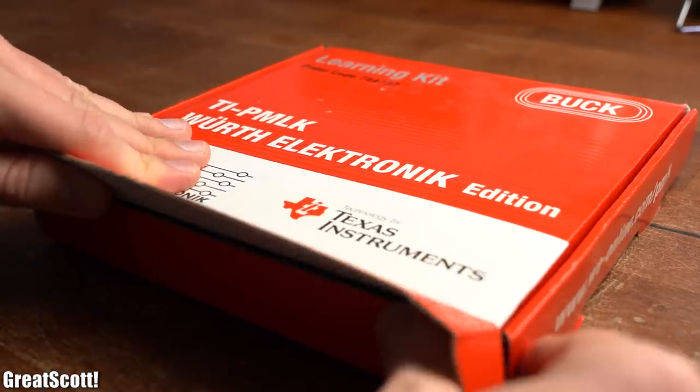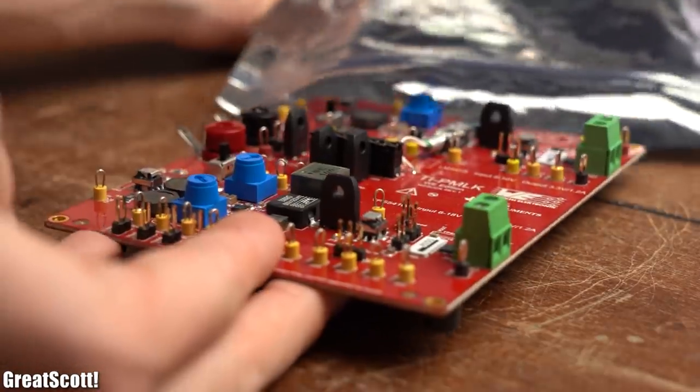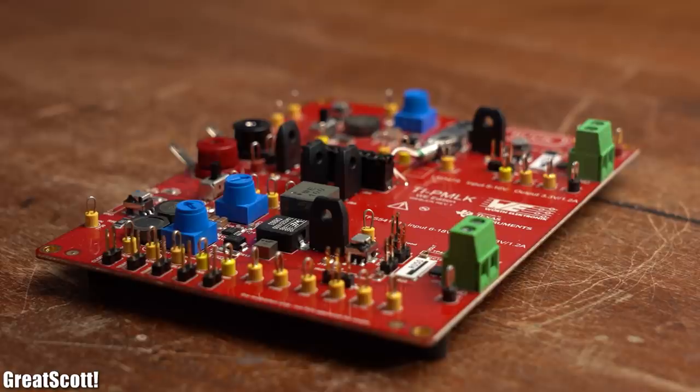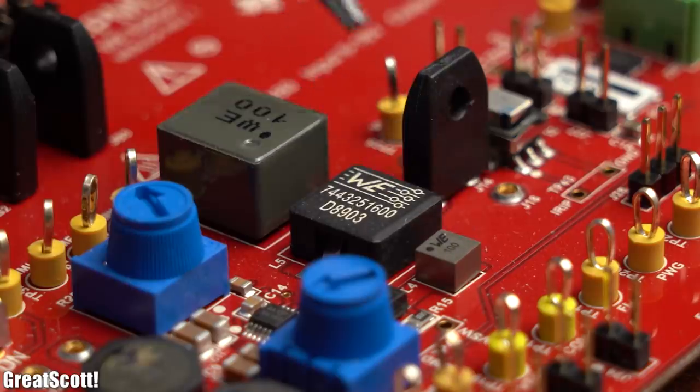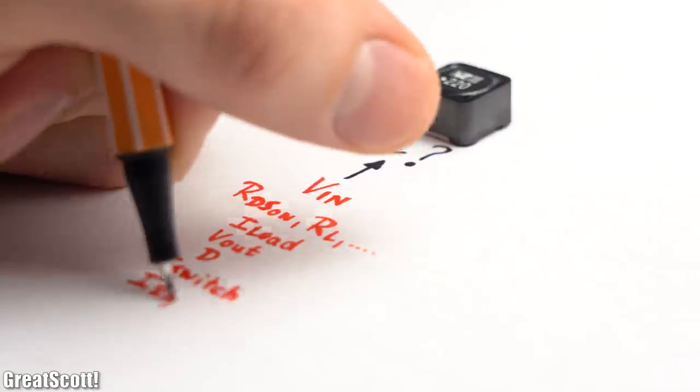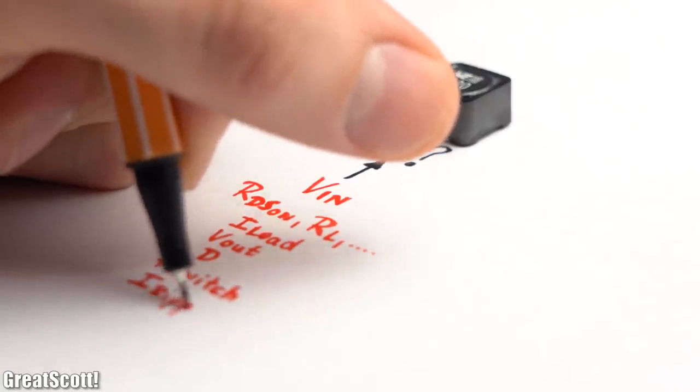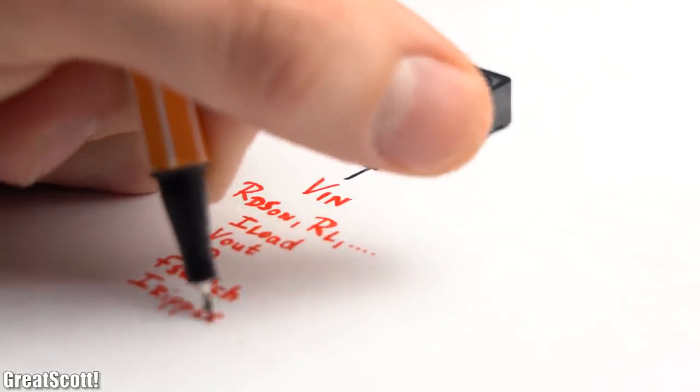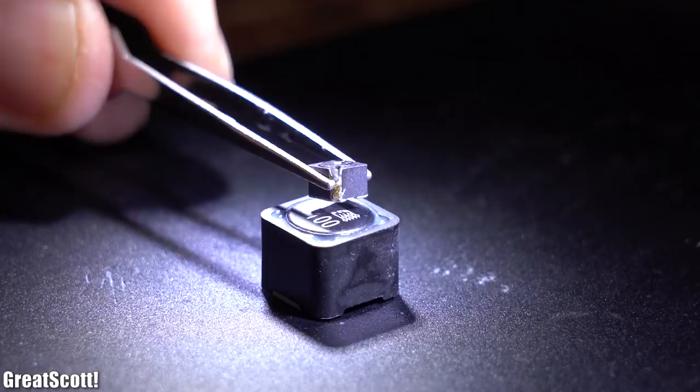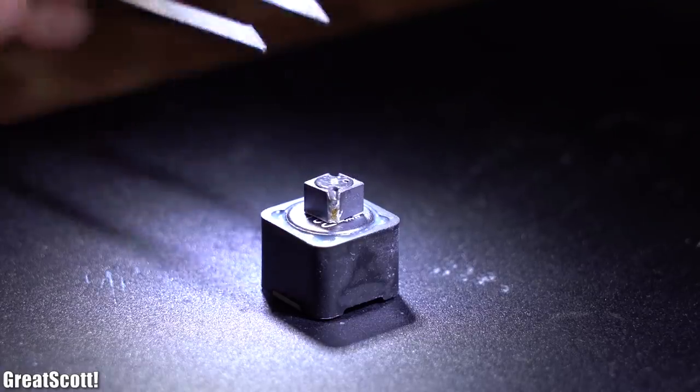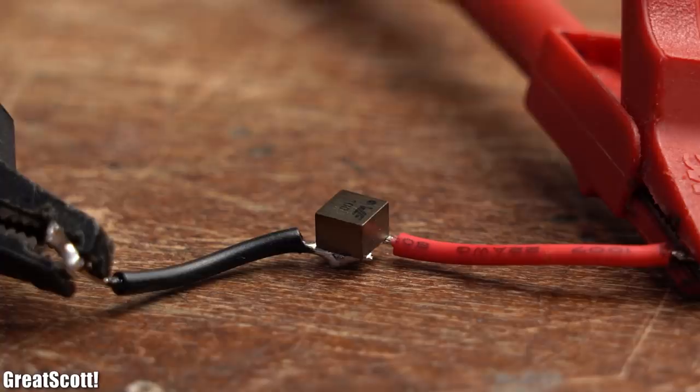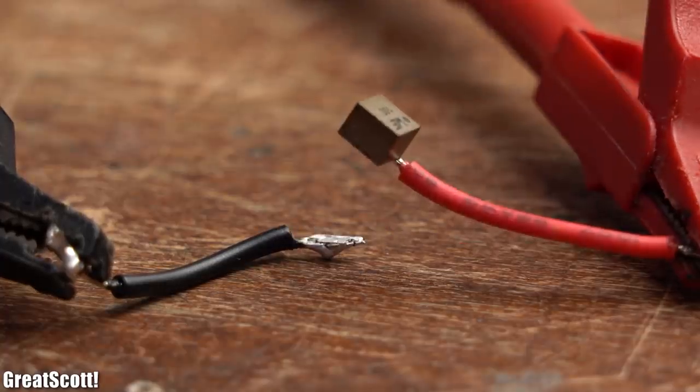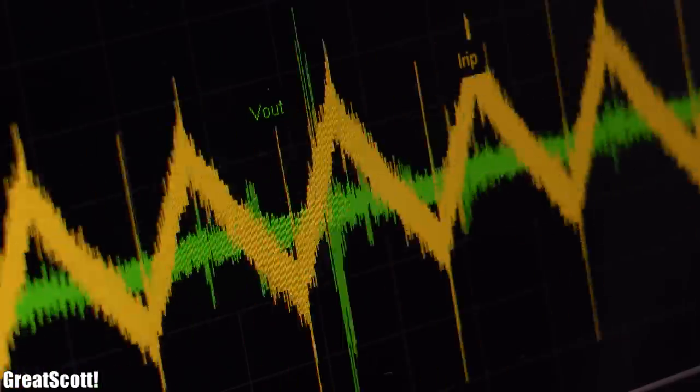To solve this problem the Würth Elektronik eiSos group sent me a buck converter learning kit which utilizes different kinds of coils. So in this video we will not only find out how to calculate the inductance for such a buck converter, but we will also find out how for example the size, core material and temperature influence our utilized coils. Let's get started!